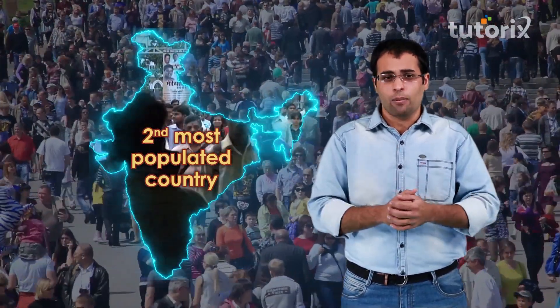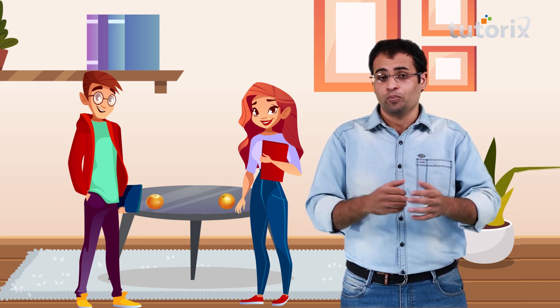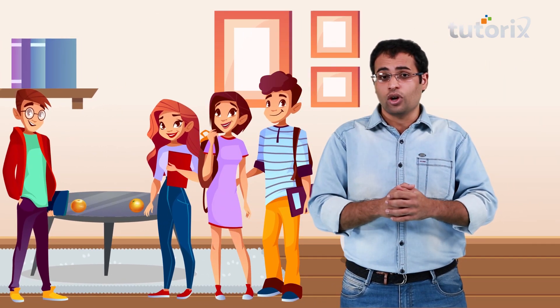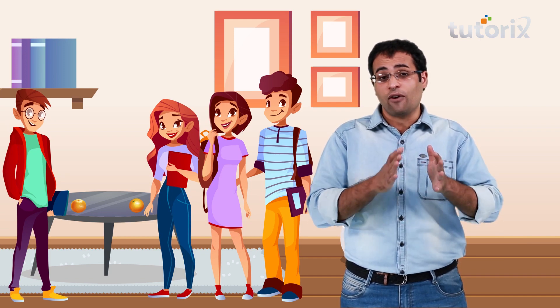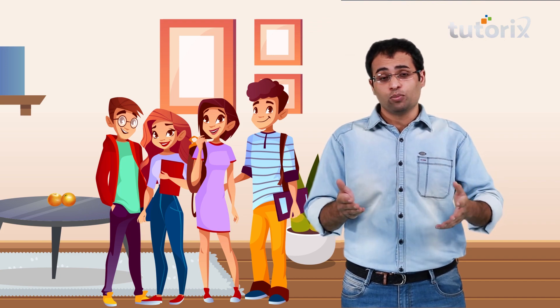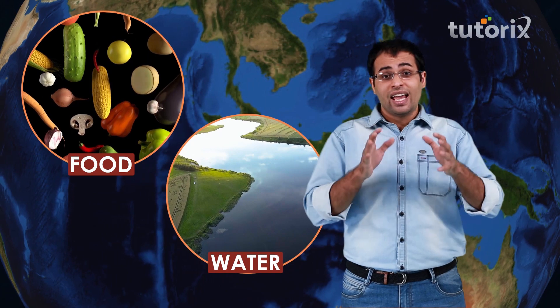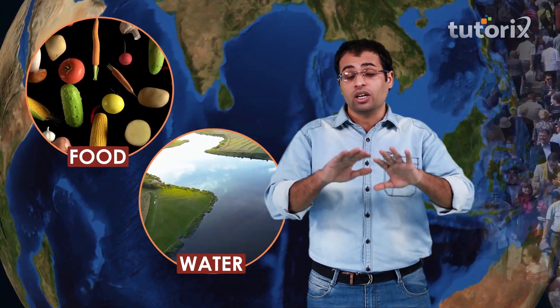Suppose you have two oranges and one of your friends comes to your house to visit you. You can share one orange with your friend and both of you can enjoy one complete orange. However if two more of your friends come to your house, a problem arises — now we have two oranges which have to be shared among four people, and because of this none of you will get one complete orange. Problems arising out of increasing population are quite similar: on earth we have limited resources of food and water, and these limited resources have to be shared among a large number of people.